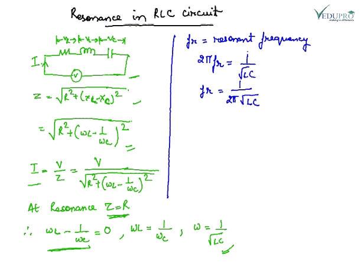If FR is the resonant frequency, so 2 pi FR is equal to 1 upon root LC. So FR, the resonant frequency, is given by 1 upon 2 pi root LC.